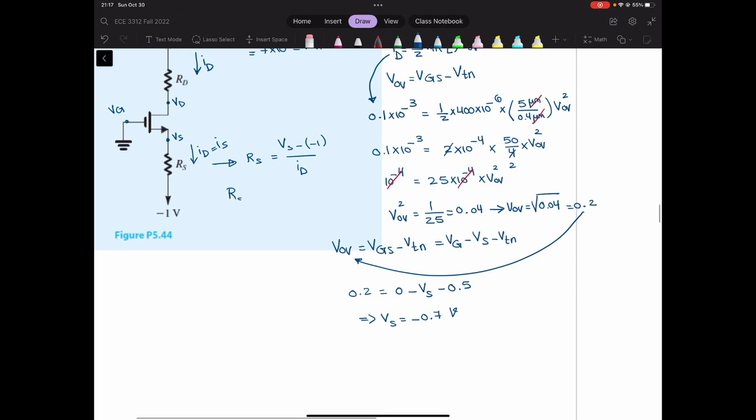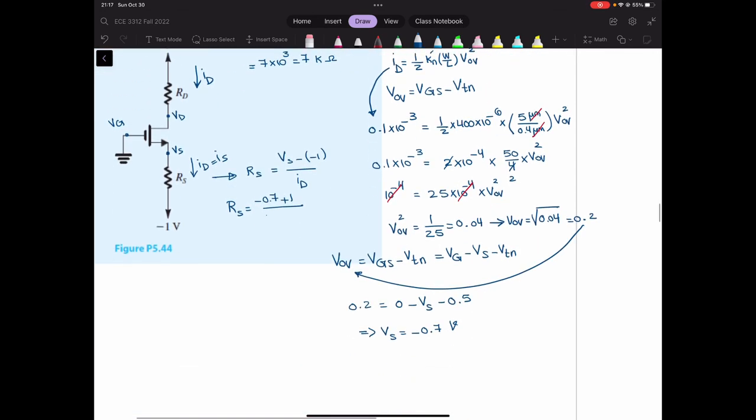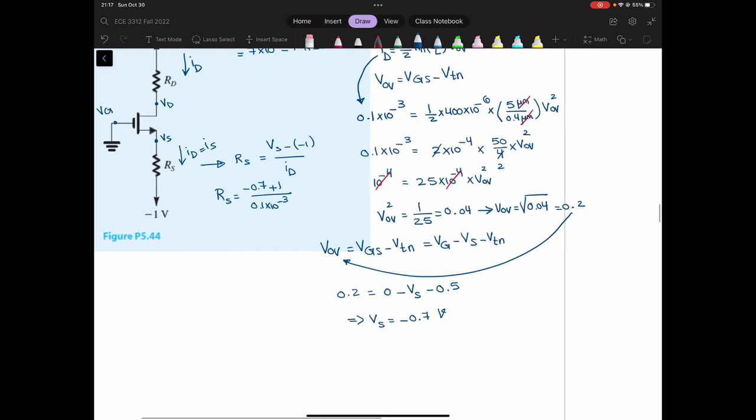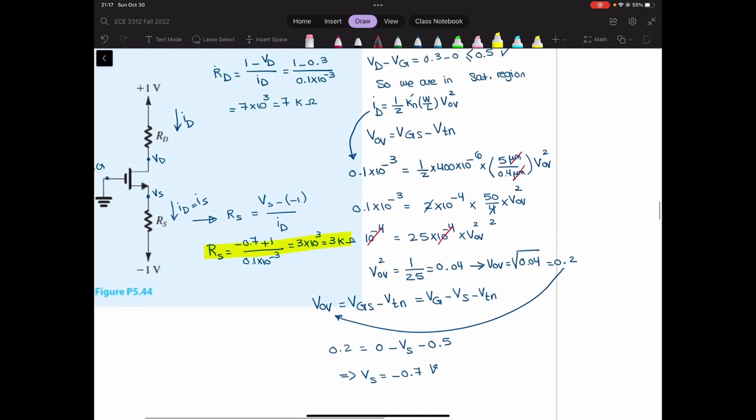So RS will be equal to VS is negative 0.7 plus 1 over, what was ID? 0.1 milliamp. 0.1, 10 to the negative 3. So that is 0.3 over 0.1 is 3 multiplied by 10 to the power of 3, or 3 kilo. So we found RS that we were looking for and RD that we were looking for. So we designed the N channel MOSFET.